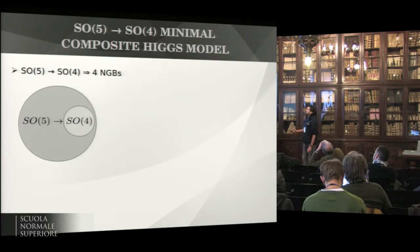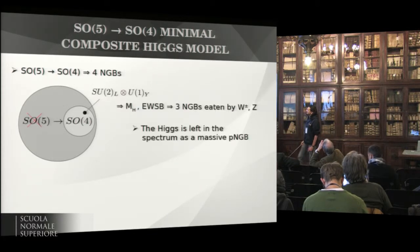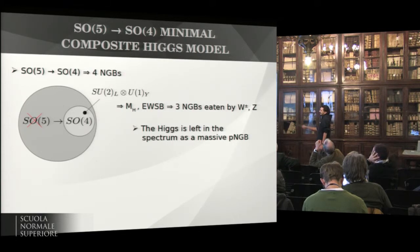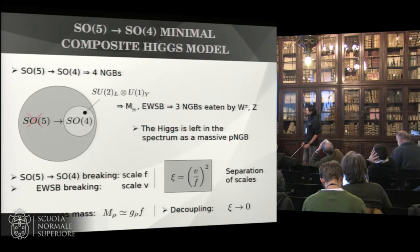SO(5) to SO(4) provides us with four Goldstone bosons, so this is the composite sector. How do we couple the elementary sector? We couple it in this way. We take SU(2)_L cross U(1) to leave inside the unbroken SO(4). This, in general, will break the SO(5) symmetry and can trigger Higgs potential. It will trigger the electroweak symmetry breaking. Three out of these four Goldstone bosons will be eaten, and what will remain will be the composite Higgs boson, as a massive pseudo-Nambu-Goldstone boson.